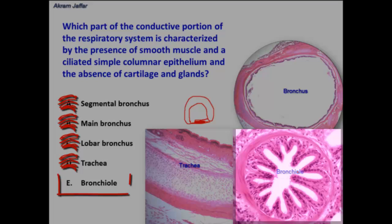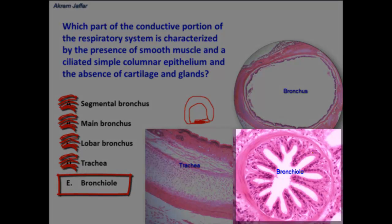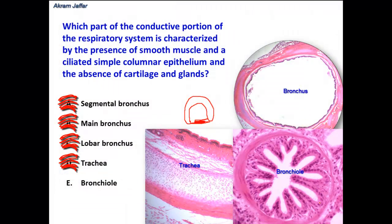The bronchiole — this is the structure of the bronchiole. The bronchiole consists of a mucosa formed of simple columnar, maybe low columnar, epithelium. There is a lamina propria, and there is a continuous layer of smooth muscle fibers, but there is no cartilage, as you can see here. There is absence of cartilage, a continuous layer of smooth muscle fibers, and then the adventitia.